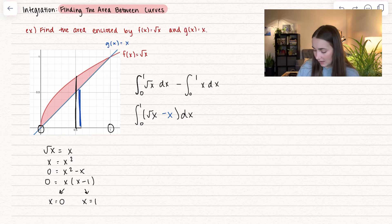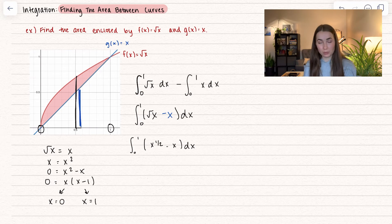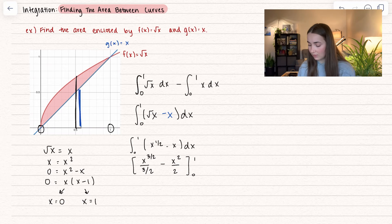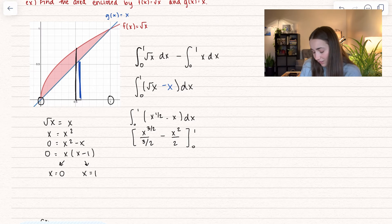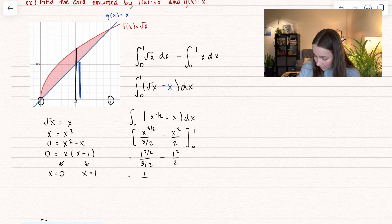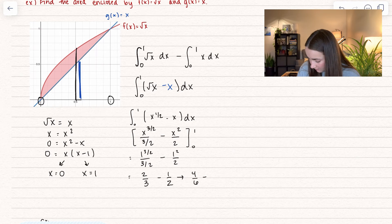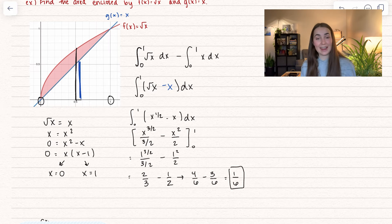Now that we've set up the integral, we integrate from 0 to 1 of x^(1/2) minus x dx. Taking the antiderivative: x^(3/2) divided by (3/2) minus x²/2, evaluated from 0 to 1. Plugging in the lower bound of 0 gives zero for both terms. Plugging in 1: the first term becomes 1 ÷ (3/2) = 2/3, and we subtract 1/2. With a common denominator of 6, we get an area of 1/6.